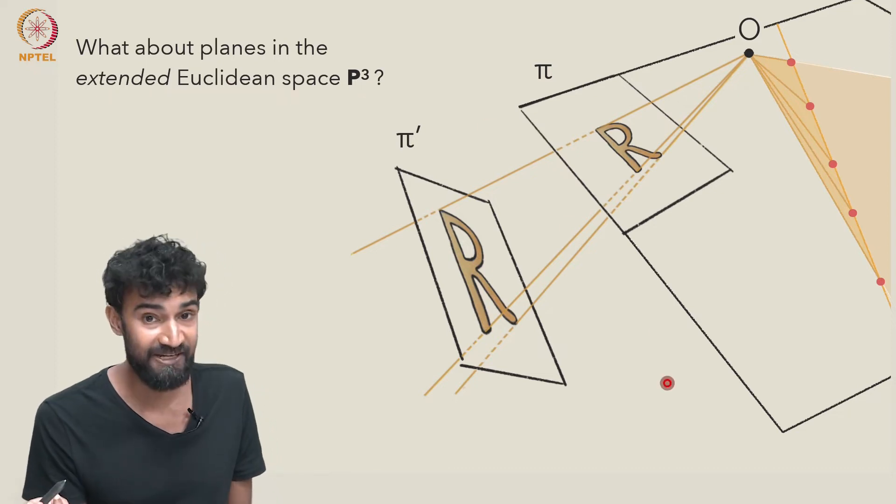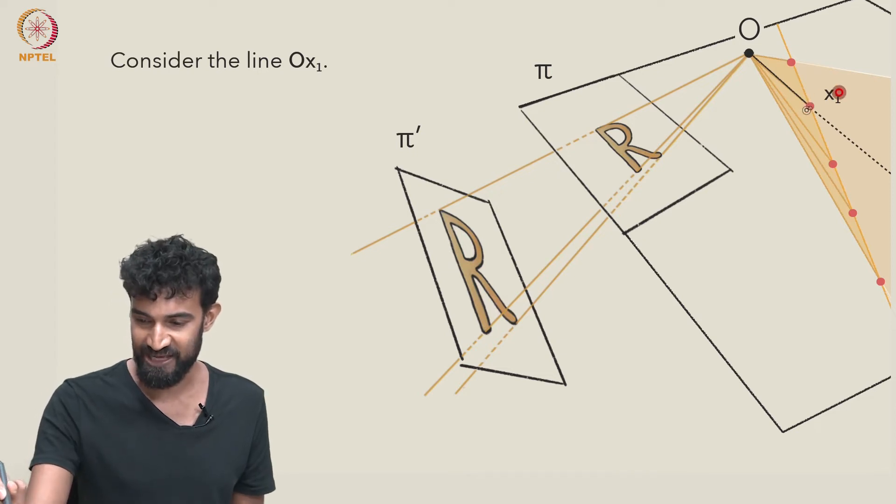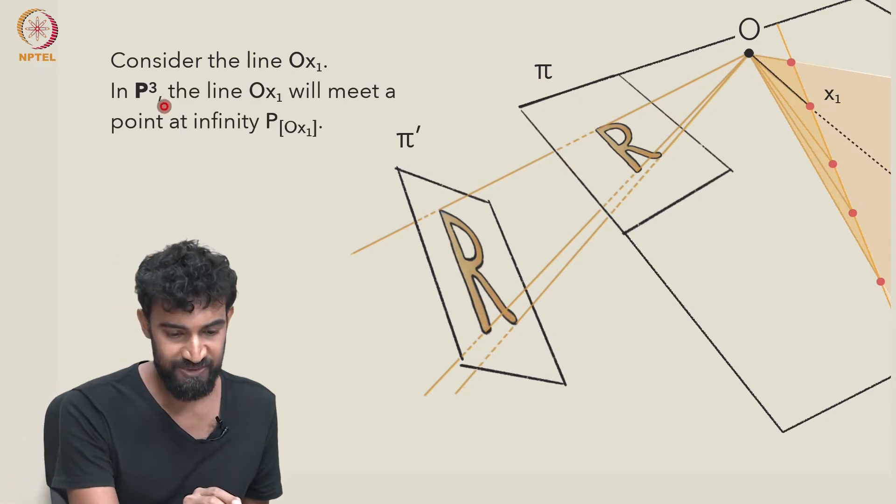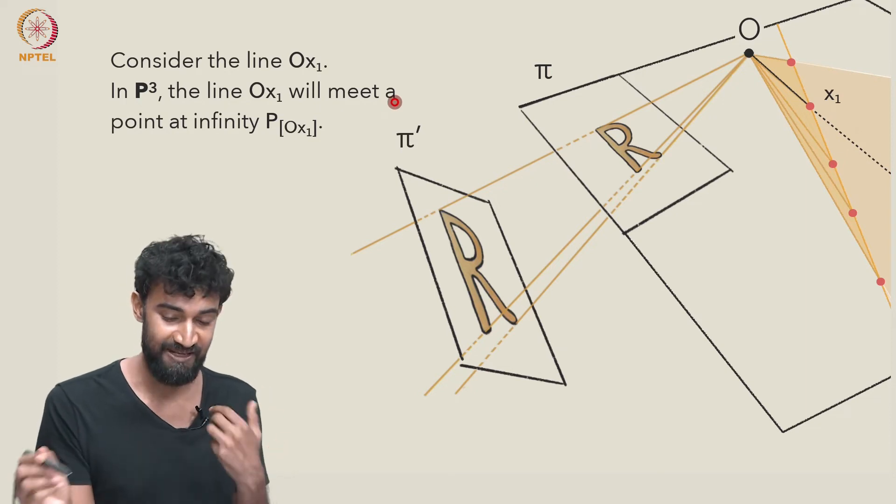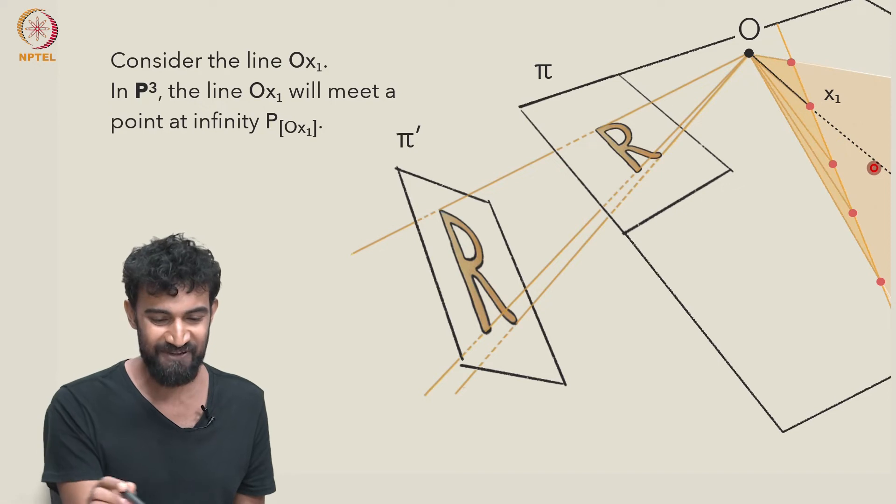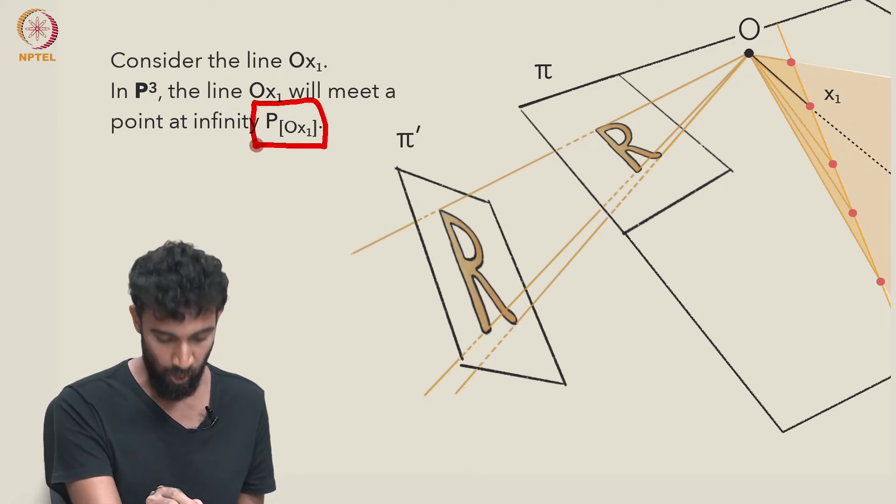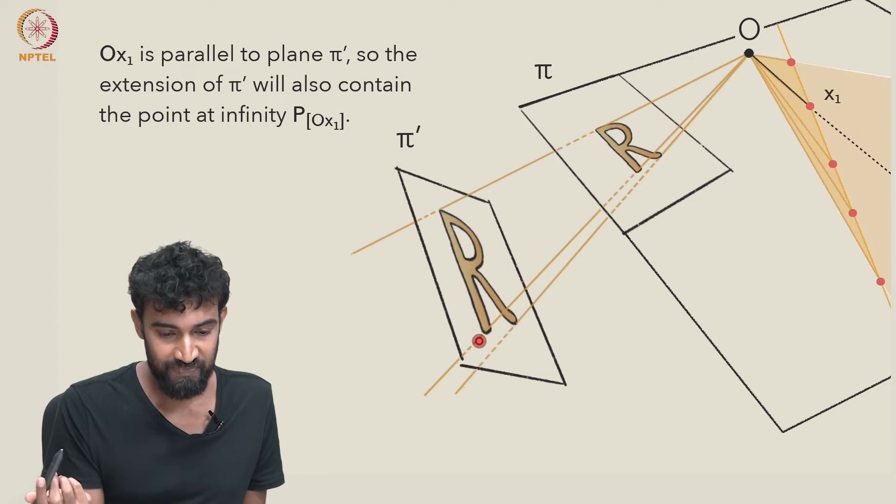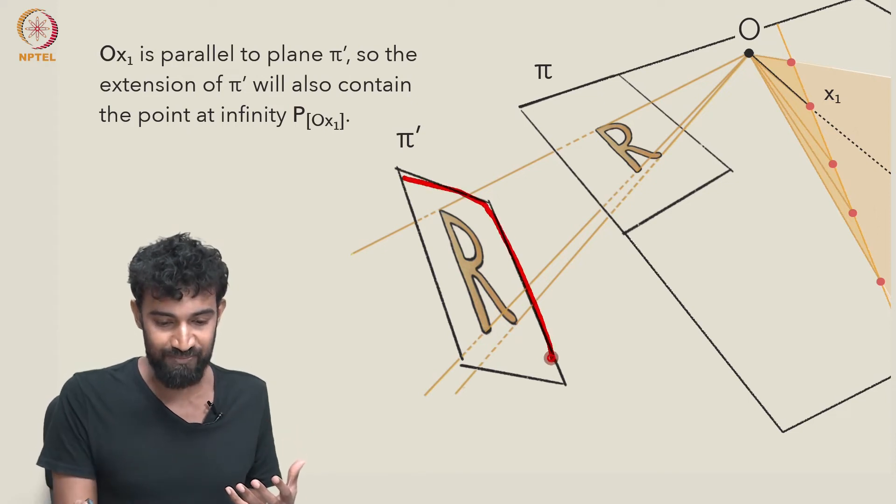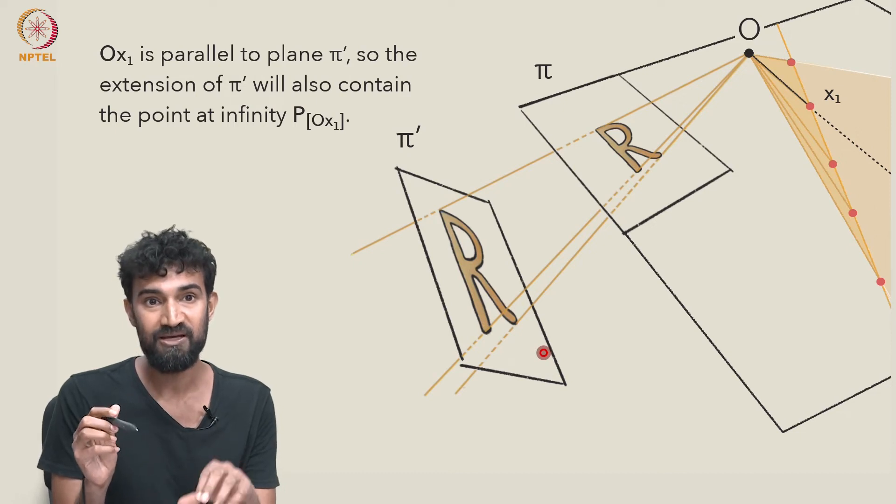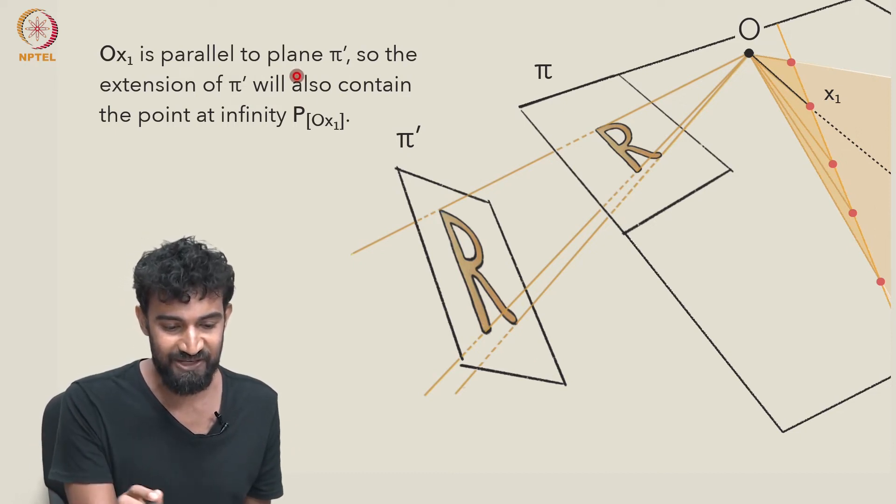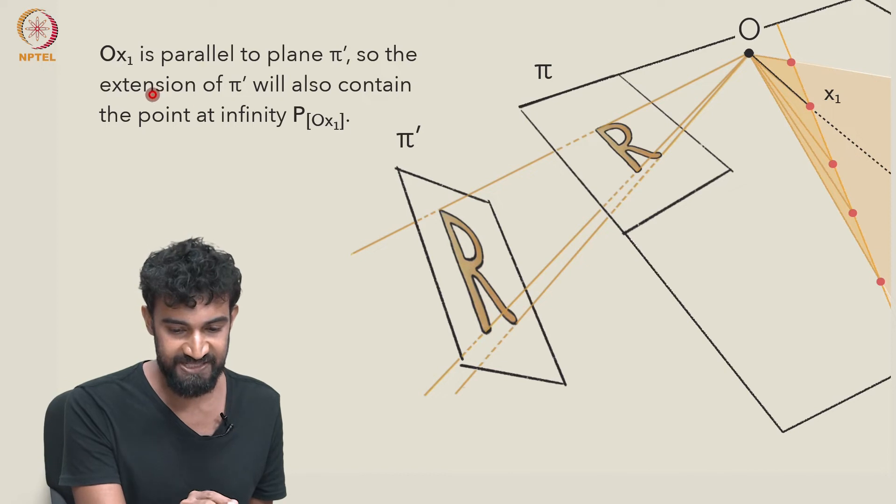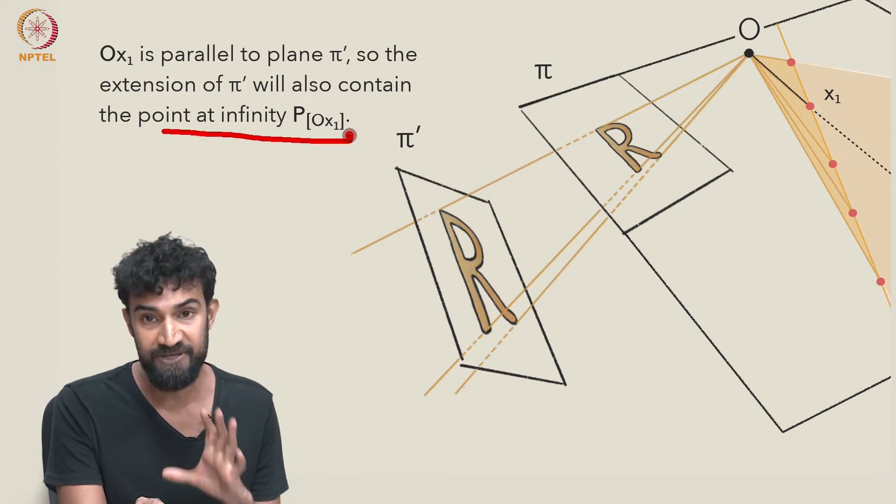Let's again take this point x1 here and consider the line Ox1. Now, in P3, the line Ox1 is going to meet a point at infinity. We keep following Ox1 out, and eventually it'll meet a point at infinity associated to it, P[Ox1]. So Ox1 is parallel to π' in R3. So the extension of π', remember for every plane in R3, when we define the extended space P3, we gave it an associated line at infinity. And the extension of π' will also contain the point at infinity, P[Ox1].